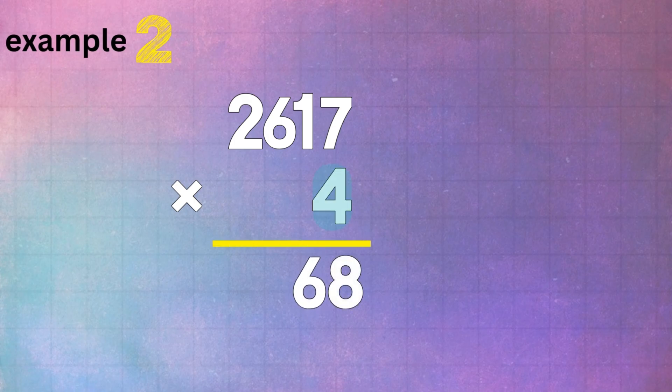Now, multiply 4 times 6, which gives us 24. Write down the 4 and carry over the 2. Finally, multiply 4 times 2, which gives us 8. Add the 2 we carried over, and that gives us 10. So, 2617 times 4 equals 10,468.